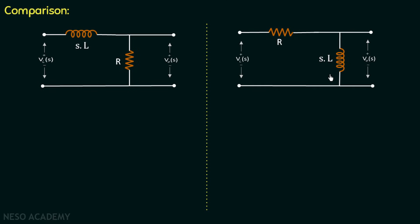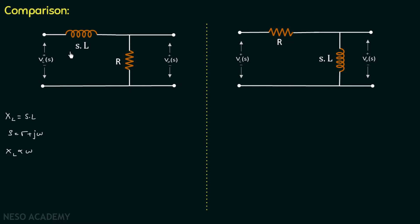Let's understand the behavior of an inductor. The reactance of an inductor, by which it opposes the flow of current, is equal to SL, and we know S equals sigma plus j·omega, so S is the frequency-dependent term. Therefore the reactance of the inductor is directly proportional to frequency. For high values of frequency the reactance will be high and it will behave as an open circuit; on the other hand, for low frequency the reactance will be low and it will behave as a short circuit.